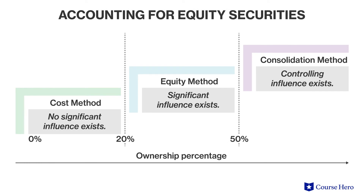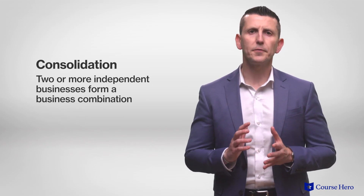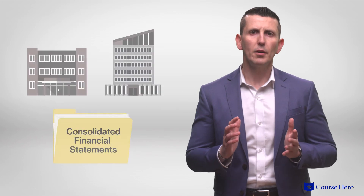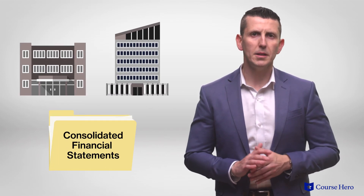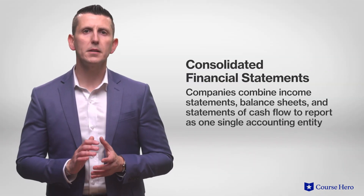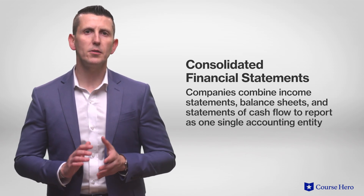If the level of ownership and influence between an investor and an investee amounts to control — understood as more than 50% — then the investment is accounted for using the consolidation method. A consolidation occurs when two or more independent businesses form a business combination from an accounting standpoint. The result is that the two companies report financial activities together on a single set of financial statements, known as consolidated financial statements, combining their income statements, balance sheets, and statements of cash flows as one single accounting entity.